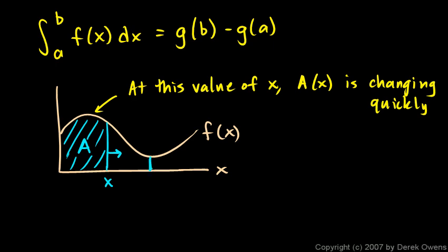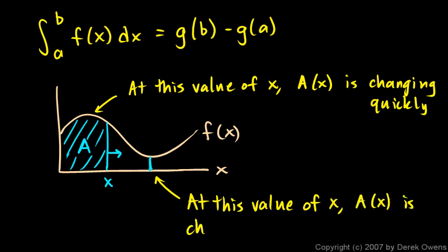But when x gets over here, each little step it takes to the right doesn't enclose as much area because the value of the function is low. So I'll make a note of that here. At this value of x, A(x) is increasing slowly.